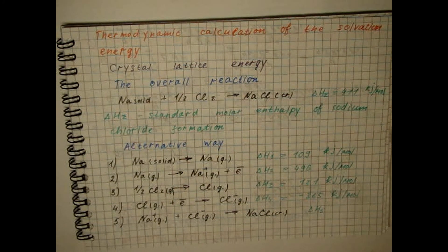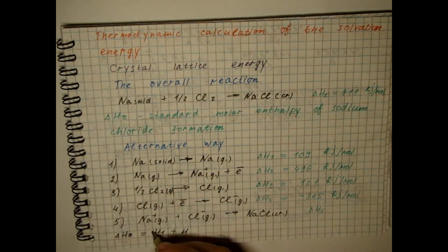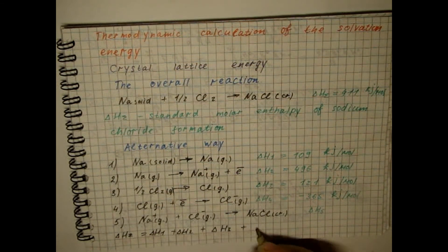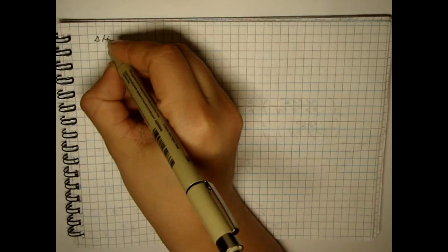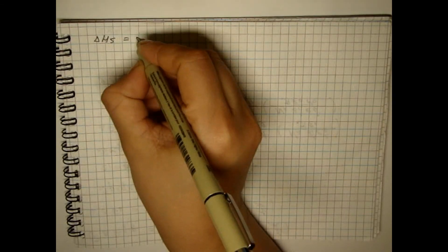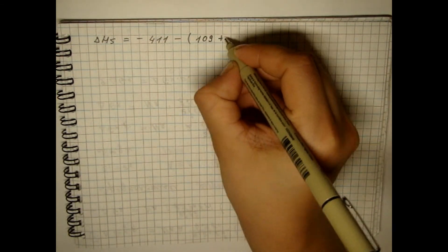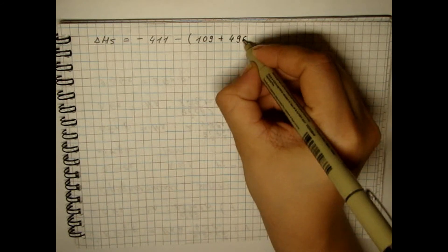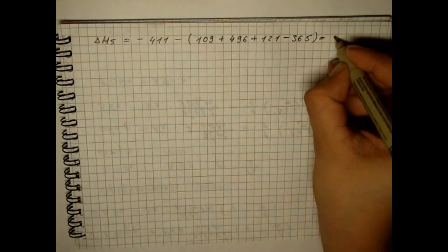To calculate its value, we use Hess's law. Substituting the indicated values into this equality, we find the energy of the crystal lattice of sodium chloride.